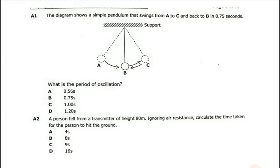The first question says the diagram shows a simple pendulum that swings from A to C and back to B in 0.75 seconds. So it moves from A to B, again moves from B to C, again it comes back to B. What you need to add,